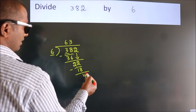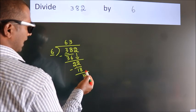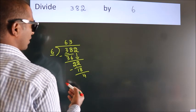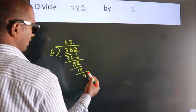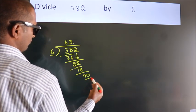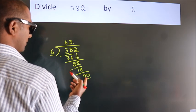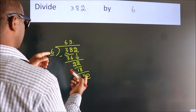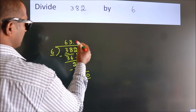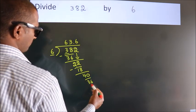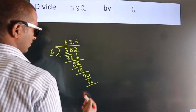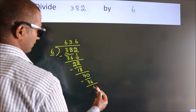After this, there are no more numbers to bring down. So what we do is put a dot and take 0, making 40. A number close to 40 in the 6 table is 6×6, 36. Now we subtract and get 4.